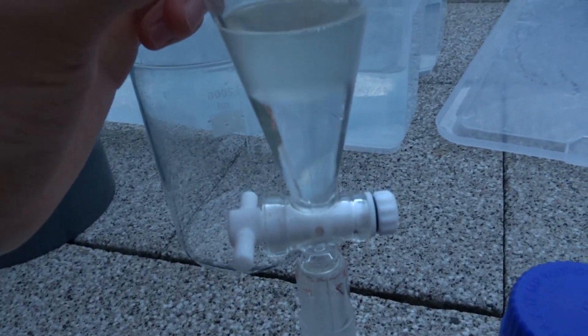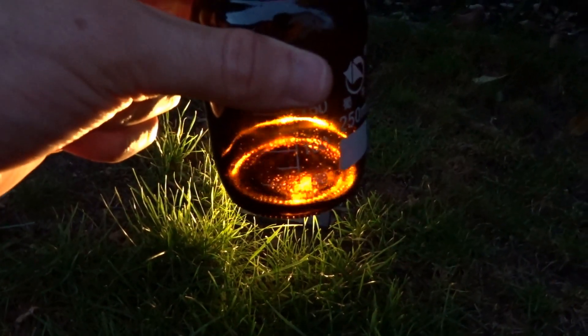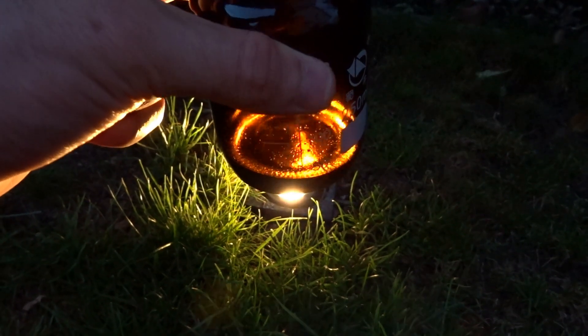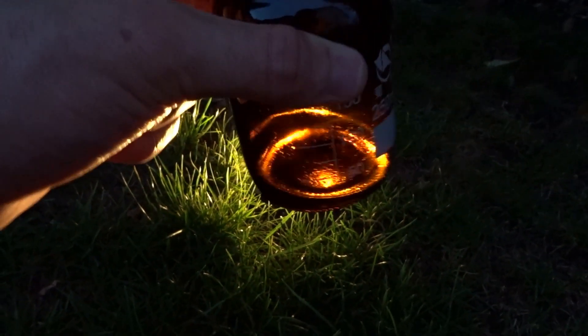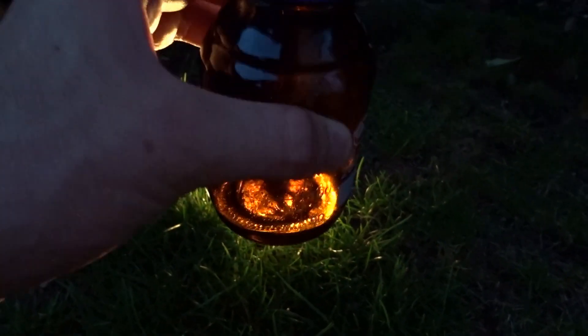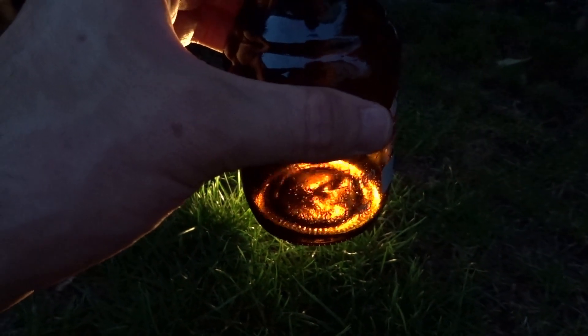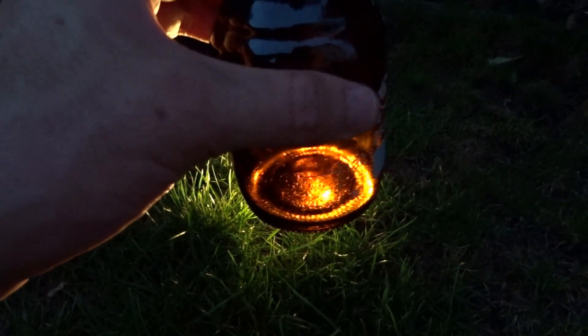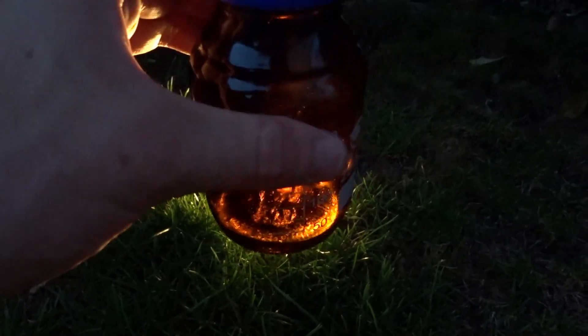So there we have it. The chloroform. Probably a little bit difficult to see, but that's what you get. Around 45 milliliters of chloroform from 2 liters of 12% bleach. That's actually quite okay.